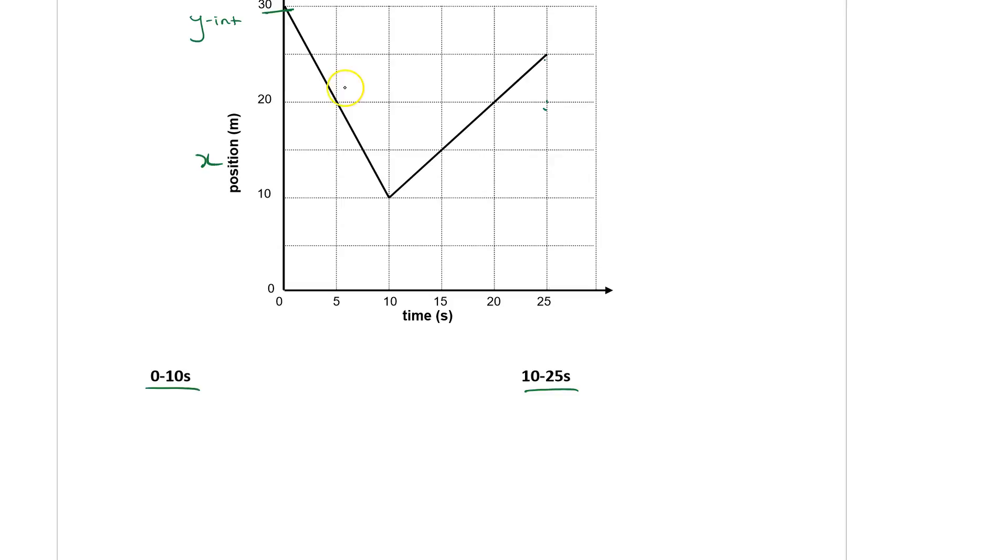We're going to look at two different periods of time. We're going to look at this first interval, the 0 to 10. So this first section we're going to look at first would be our 0 to 10 seconds. And then later on, we'll look at the second section, the 10 to 25.